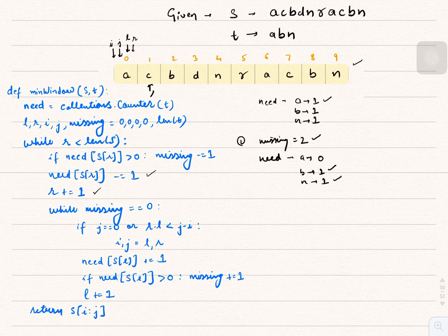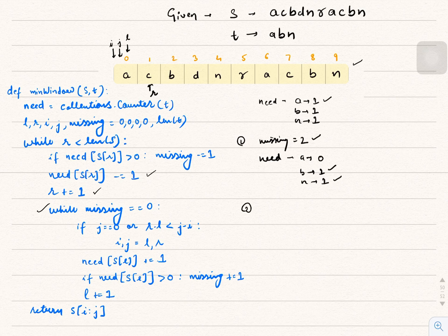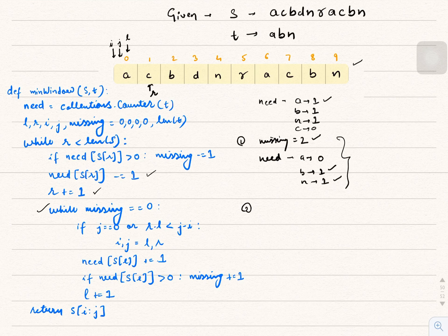Since `missing` is not 0, we don't enter the shrink condition. Back at the while loop start, R points to C. `need[C]` is 0, so `missing` doesn't change — `need[C]` becomes -1 and R increments. R now points to B. `need[B]` is 1, greater than 0, so `missing` becomes 1. `need[A]`=0, `need[B]`=0, `need[N]`=1. R increments to D.